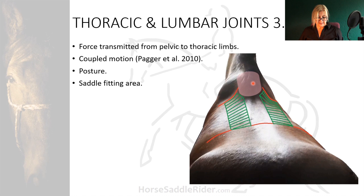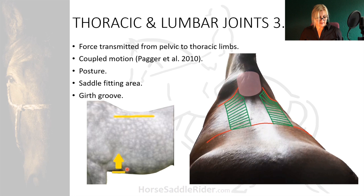An anatomical girth groove is conveniently formed in the pectoral region, but this does not always correspond with the perpendicular position of the billets or girth straps. This means that when the saddle is positioned on the back, the billets should meet the girth groove and girth position vertically.